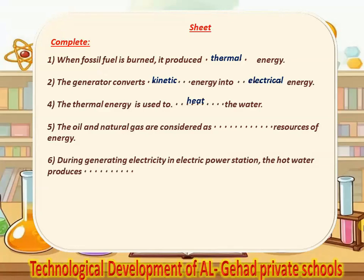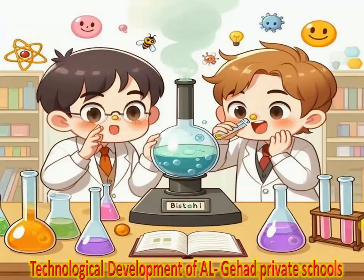Number 5, the oil and natural gas are considered as non-renewable resources of energy. Number 6, during generating electricity in an electric power station, the hot water produces steam.